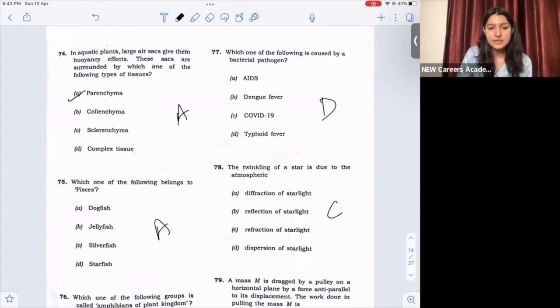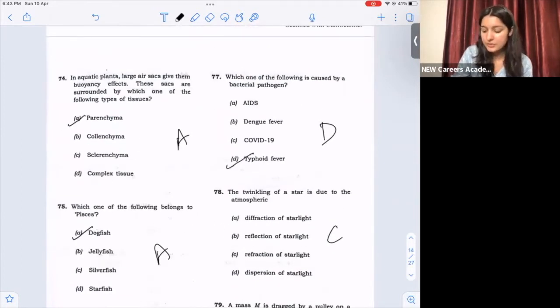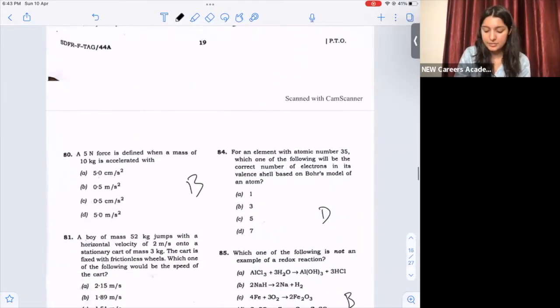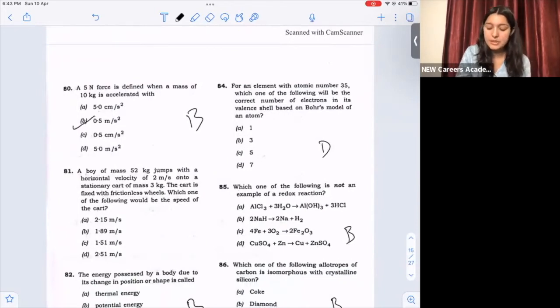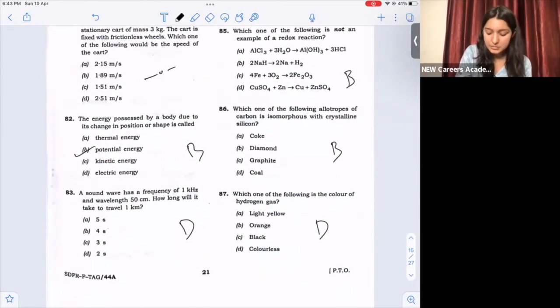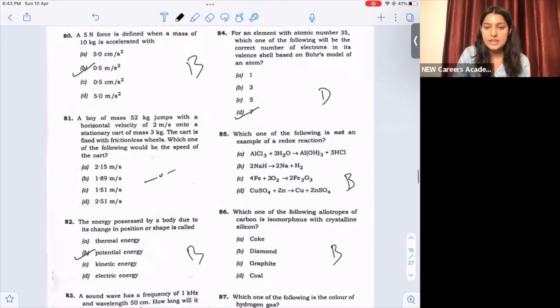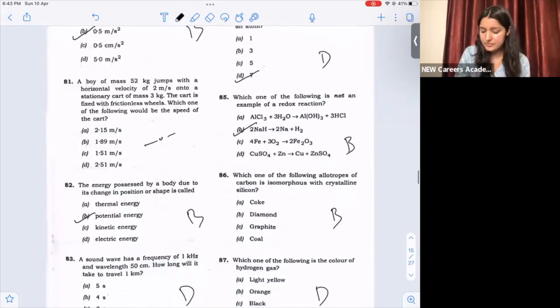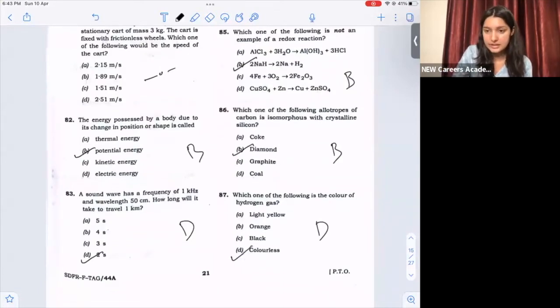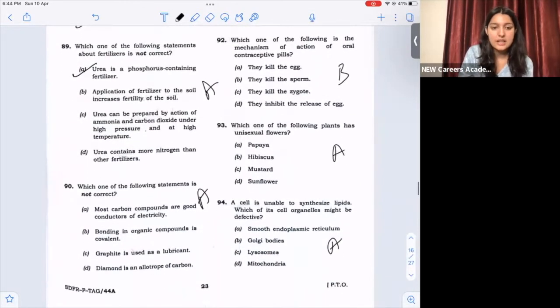75, option A, dogfish. 76, option A, bryophytes. 77, option D, typhoid fever. 78, option C, refraction of starlight. 79, option B, negative. Question number 80, option B, 0.5 meter per second square. 81 is doubtful. 82, option B, potential energy. 83, option D, 2 seconds. 84, option D, 7. 85, option B. 86, option B, diamond. 87, option D, colorless. 88, option D, silica. 89, option A, urease of phosphorus containing fertilizer. Question 90, option A, most carbon compounds are good conductor of electricity.